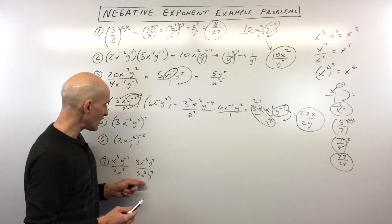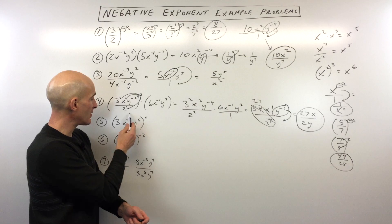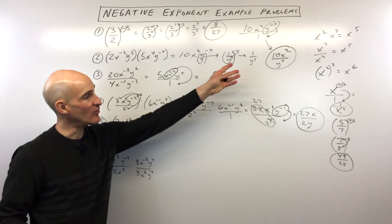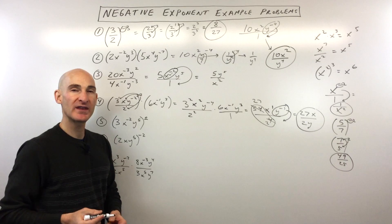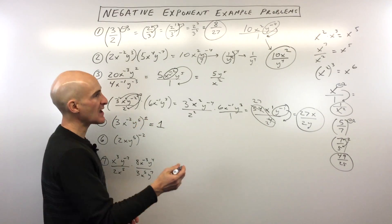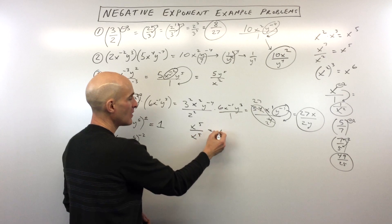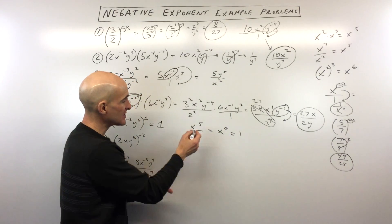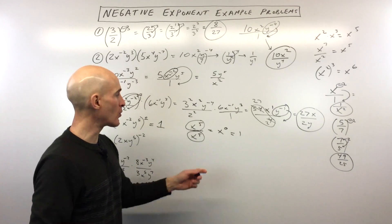Let's jump into the rest of the examples. We've got 3x to the negative 2, y to the fifth — that whole thing is raised to the zero power. This is a bit of a trick question. Do you remember when you raise something to the zero power? It equals 1. For example, x to the fifth divided by x to the fifth: 5 minus 5 is 0, and anything to the zero power is 1, which makes sense because x to the fifth divided by itself goes in one time.